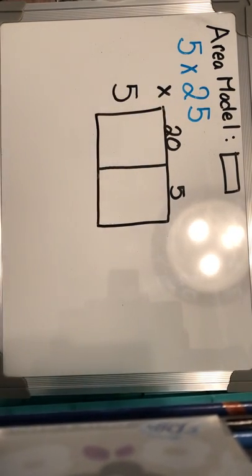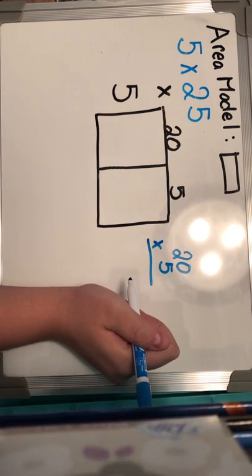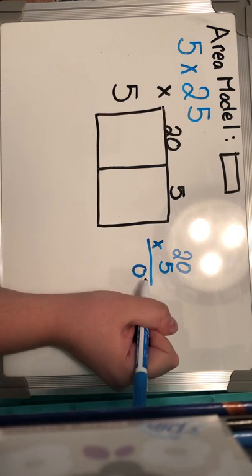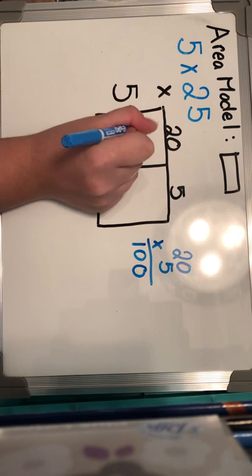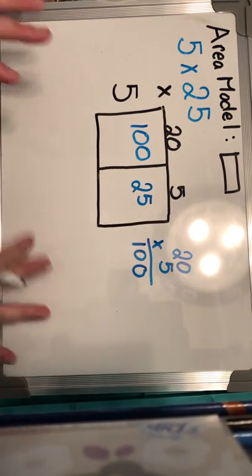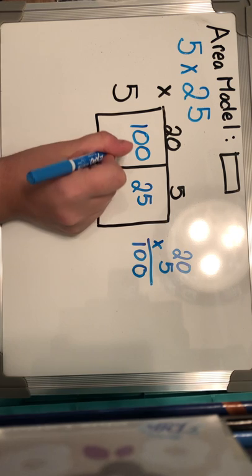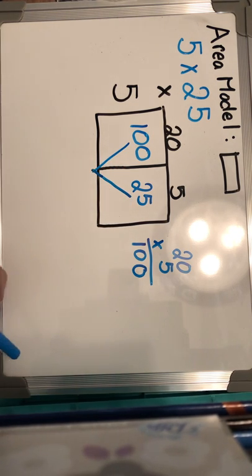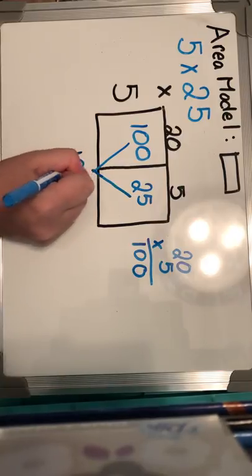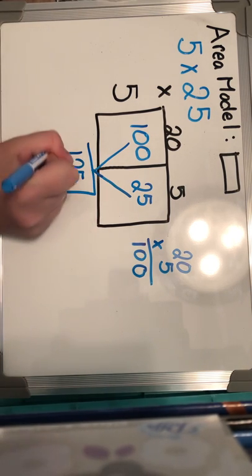I'm going to start off with 20 times five. You can go ahead and write it off to the side if you want. This is a multi-digit by single digit multiplication: zero times five is zero, five times two is 10, so five times 20 is 100. Now I'm going to do five times five, which I know automatically is 25. Step one is to start multiplying and get to this point. Step two is you're going to add 100 and 25 together and you're going to get an answer of 125. So really five times 25 is going to give me an answer of 125.